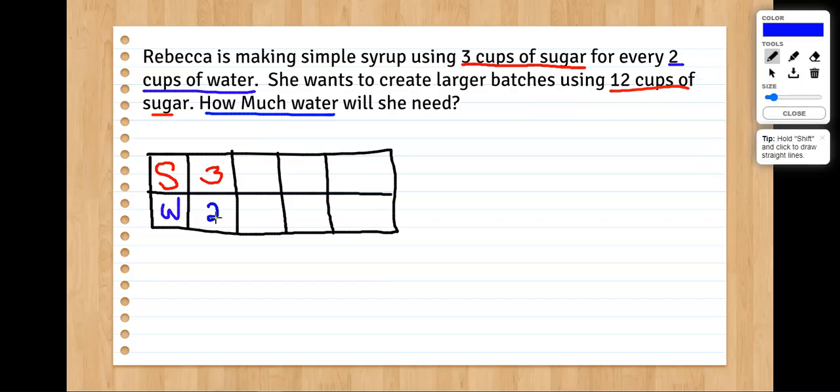Now, if we're going to increase that recipe, if we want to make a double batch or a triple batch, obviously we need more sugar and water. But in order for the recipe to stay the same, we have to increase them in proportional amounts to each other. So as one goes up, the other has to go up at the same rate. Otherwise it'll end up being more diluted or more sweet than it was originally.